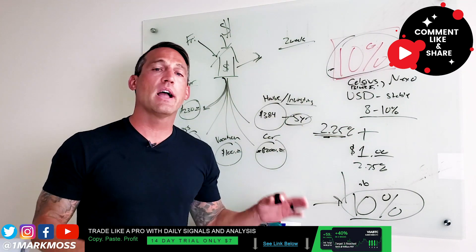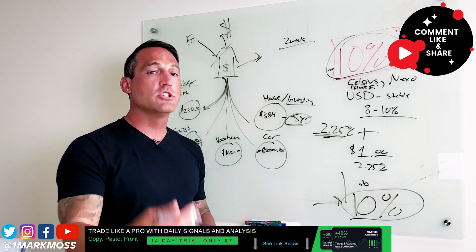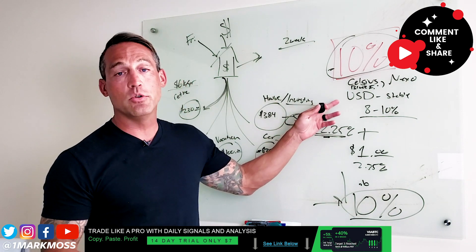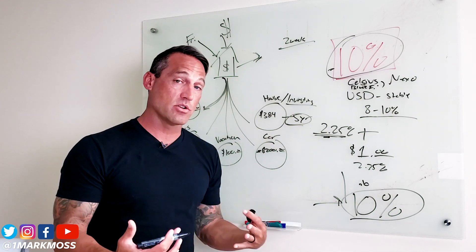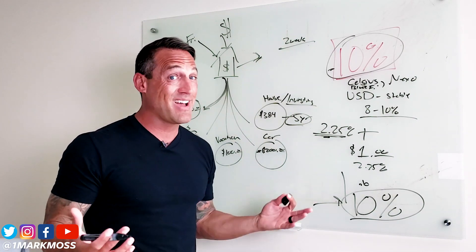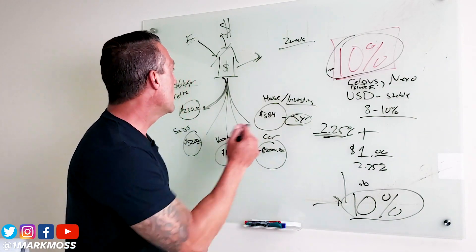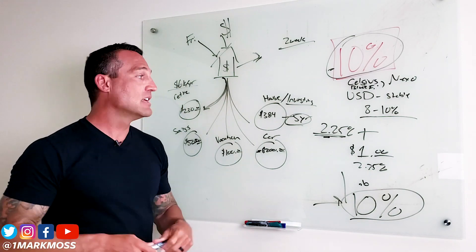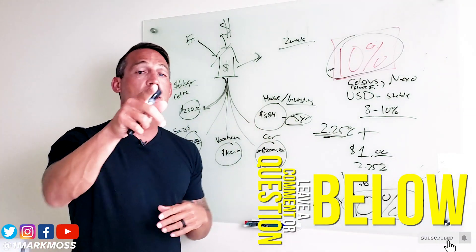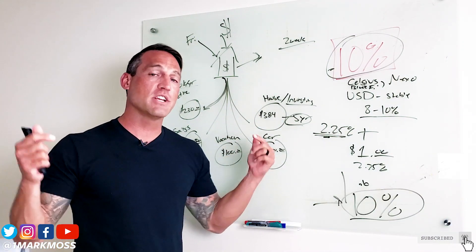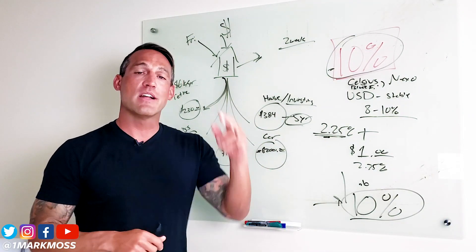Celsius, Nexo, BlockFi, any of these crypto lending platforms check them out see what they pay you on your US dollar stable coins. I believe Nexo will even take your dollars and not even make you convert it to a stable coin. But that's it hopefully that makes sense to you guys. Leave me a comment let me know what you think, give me some thumbs up if you like this video. I'd love to have conversations with each one of you in the comments.